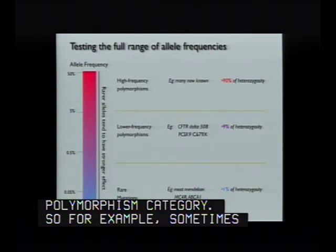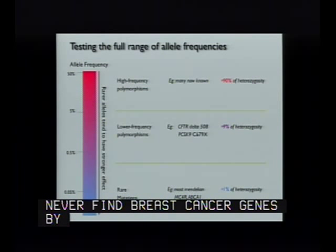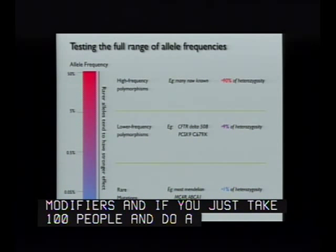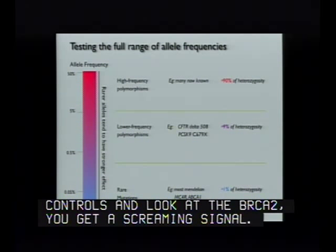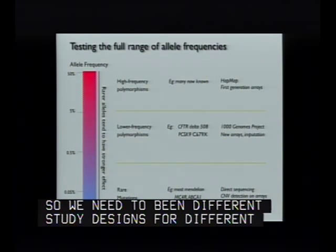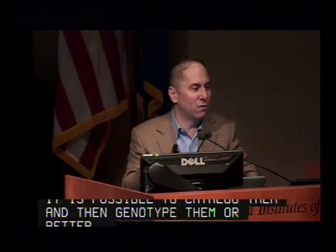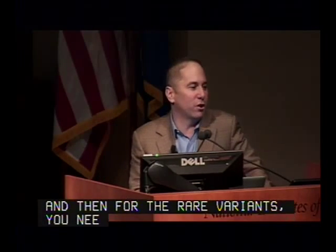We need to think about different study designs for these different categories. We've already studied the most common variants. This next set of lower-frequency variants can be studied by sequencing, but sequencing remains expensive. It is possible to catalog them and then genotype them, or even figure out ways to do statistical imputation of the variant's existence based on linkage disequilibrium, which is really inexpensive. For the truly rare variants, you need to sequence. All of this is possible because of the explosion in next-generation sequencing technology.